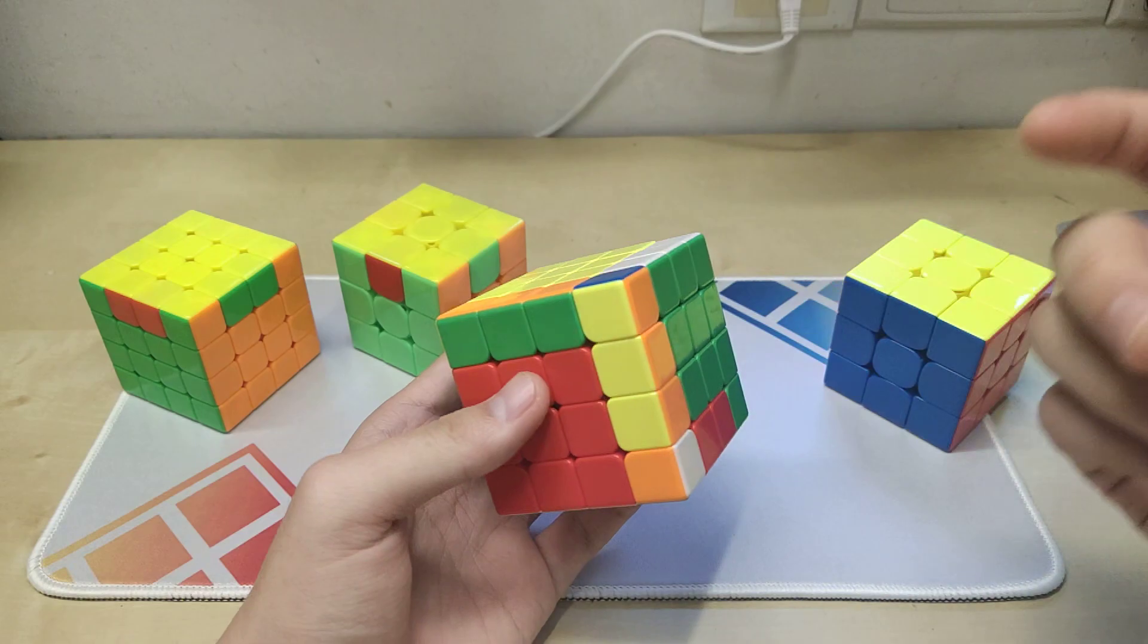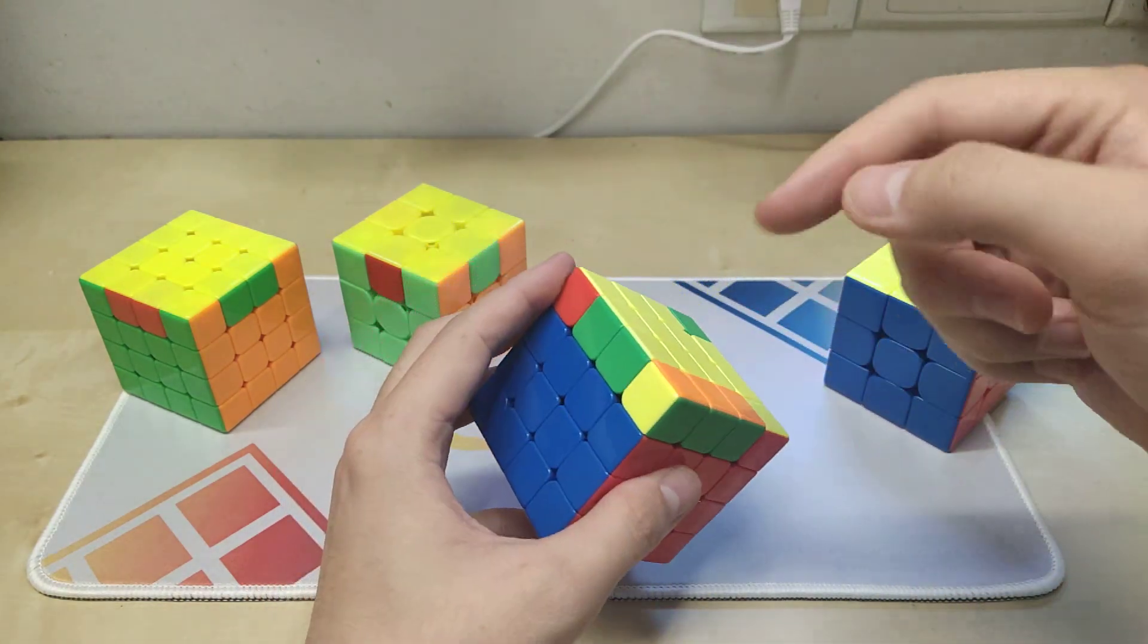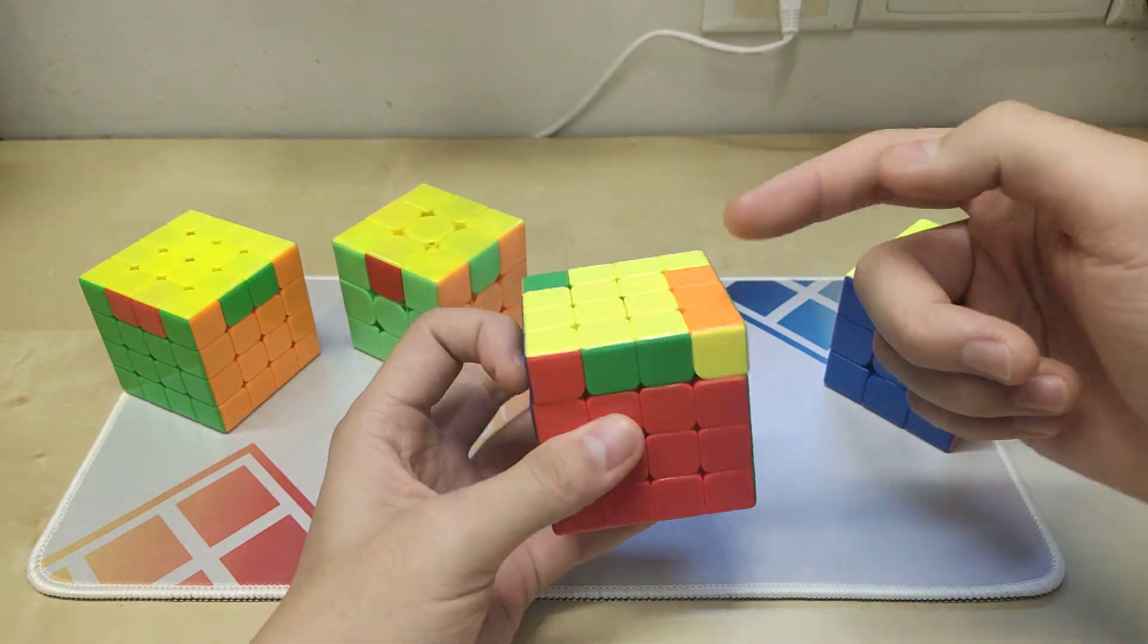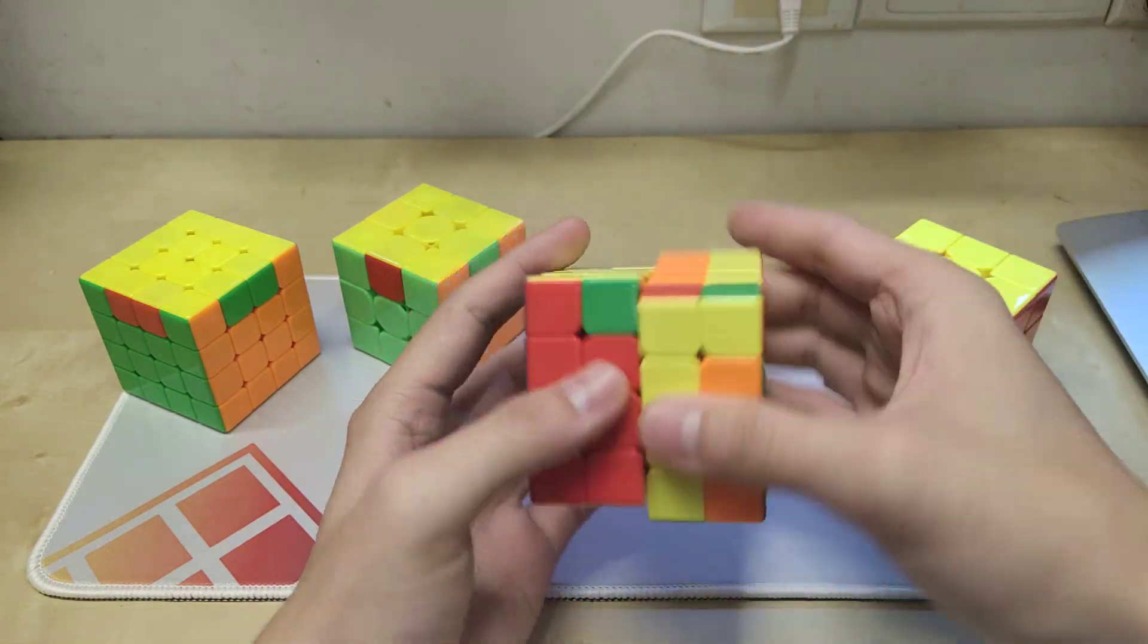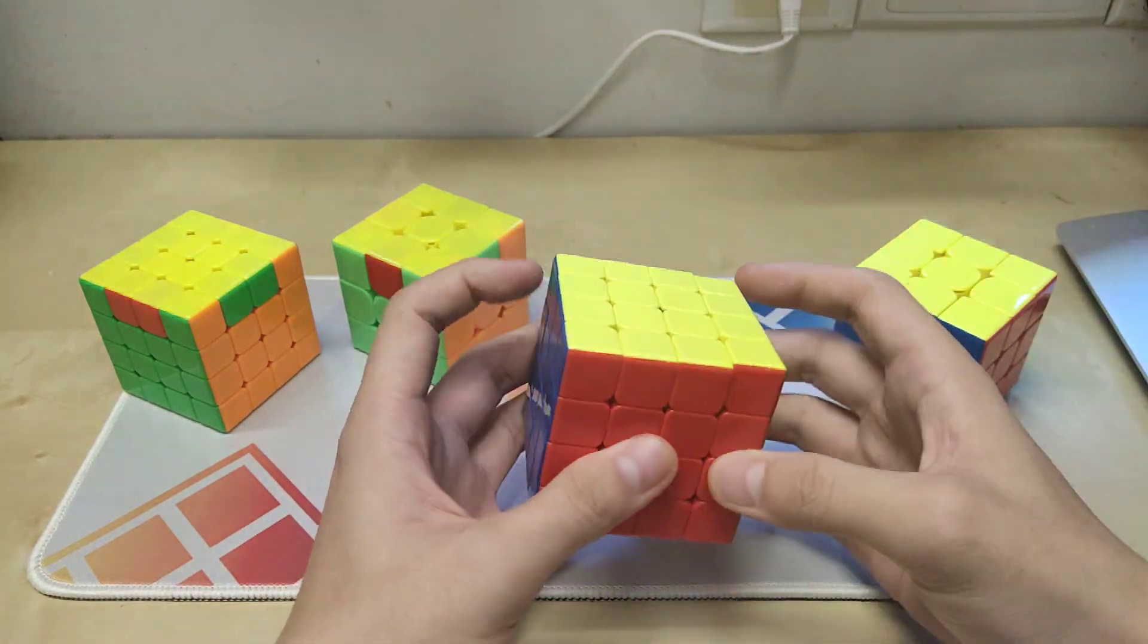Now here, instead of doing R, we do an R2 to put the green and the red edge at the opposite direction, and then PLL parity. And finally, we solve it.